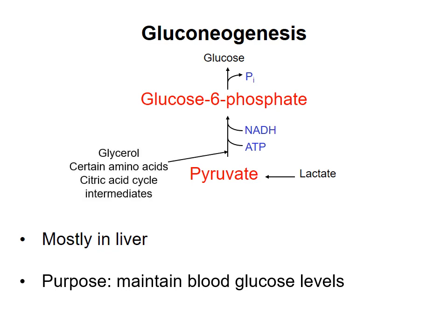Quite a few different compounds can be used to make glucose, including lactate, pyruvate, glycerol, citric acid cycle intermediates, and certain amino acids. But for simplicity, we will consider the pathway when pyruvate is the starting material.